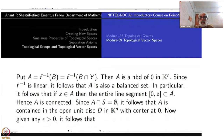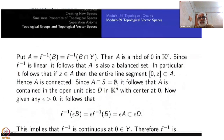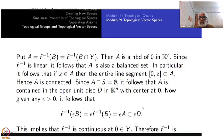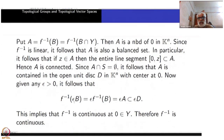Now, given any ε > 0, it follows that f-inverse of εB equals ε times f-inverse of B by linearity of f-inverse, which equals εA. So εA will be contained inside the ε-disk, since A is contained inside the unit disk D. This implies that f-inverse of εB is contained in εD, so f-inverse is continuous at 0.